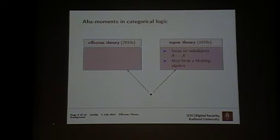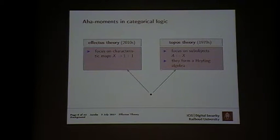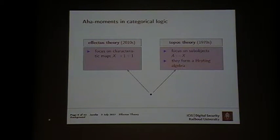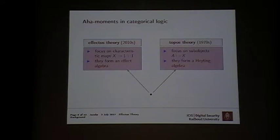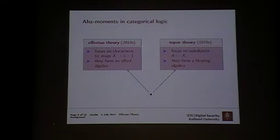A big discovery was that the structure of subsets in many categories is constructive — it has the structure of Heyting algebras. That made constructive logic more respectable because these Heyting algebras appeared very explicitly in topological settings. Now, effect theory starts from a slightly different observation. The focus is not so much on sub-objects, but on characteristic maps — maps from X to 1+1, where 1+1 can be seen as Booleans. In sets, there is a bijective correspondence between subsets and characteristic maps, but in other categories these characteristic maps have the structure of effect algebras.